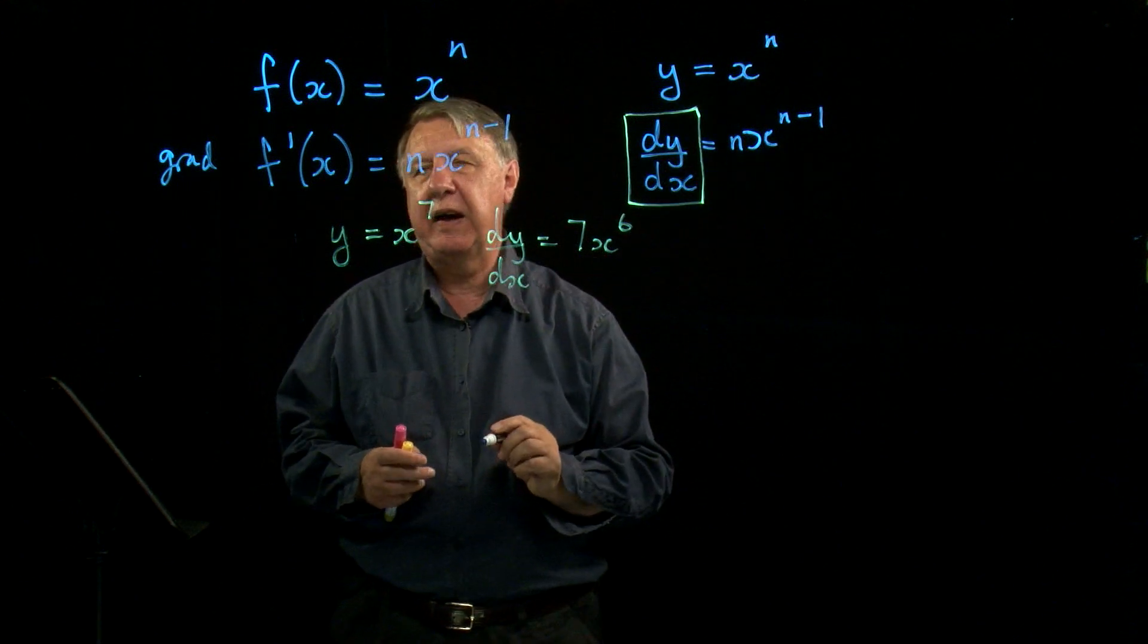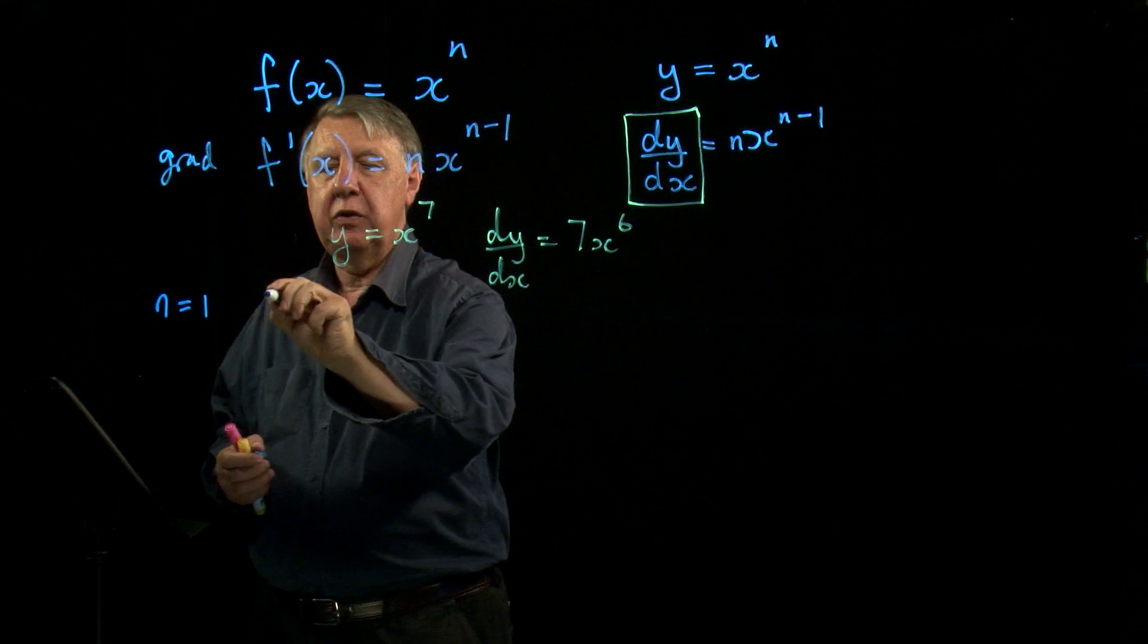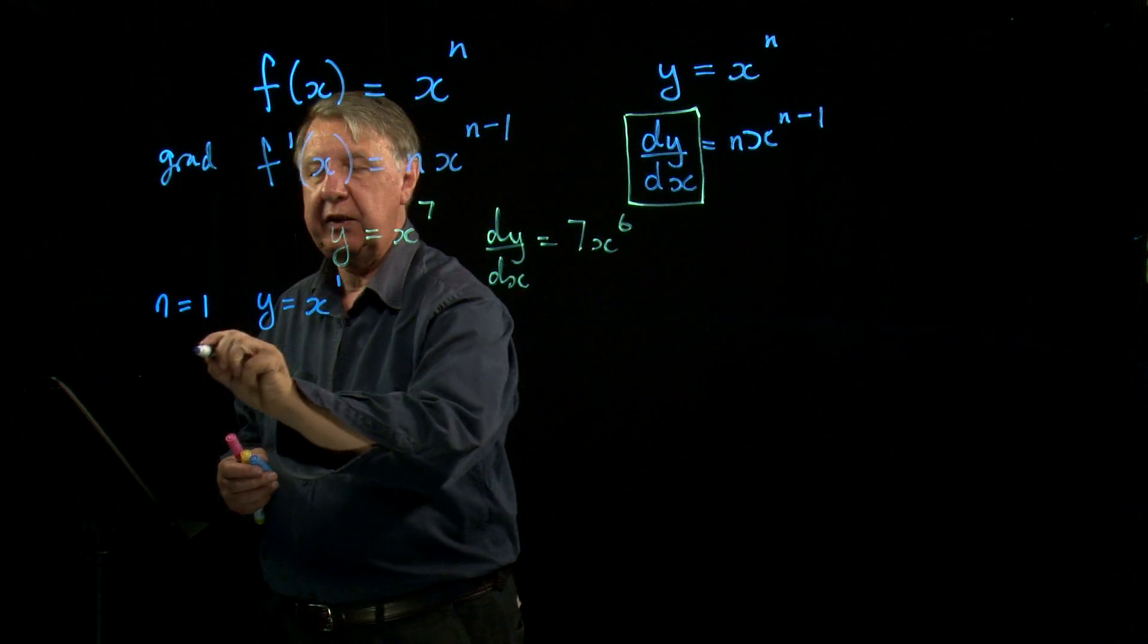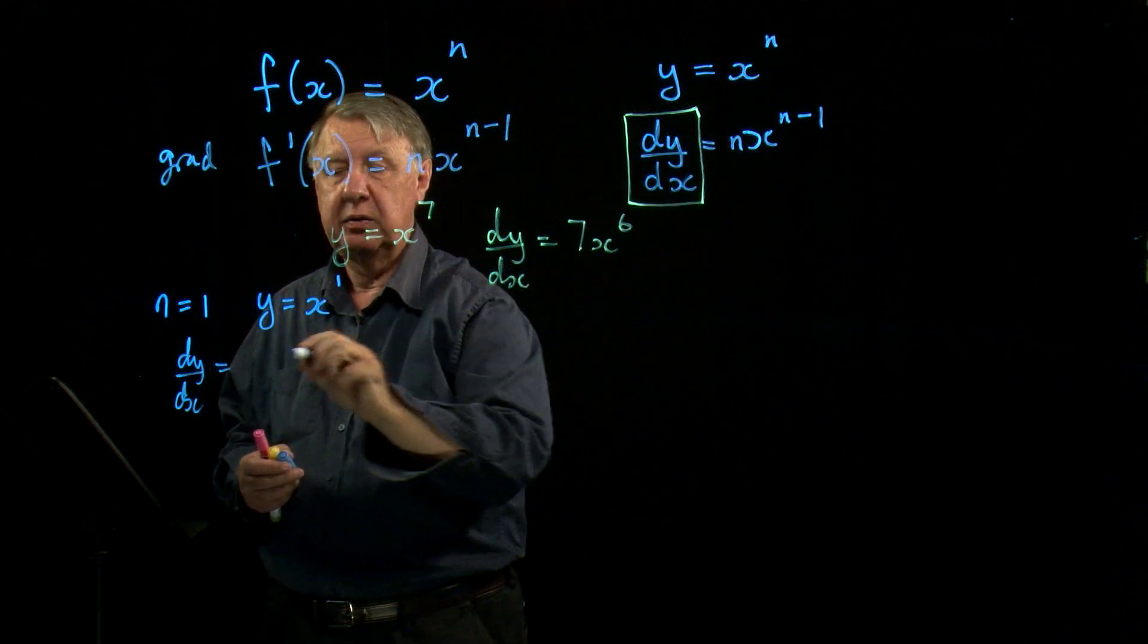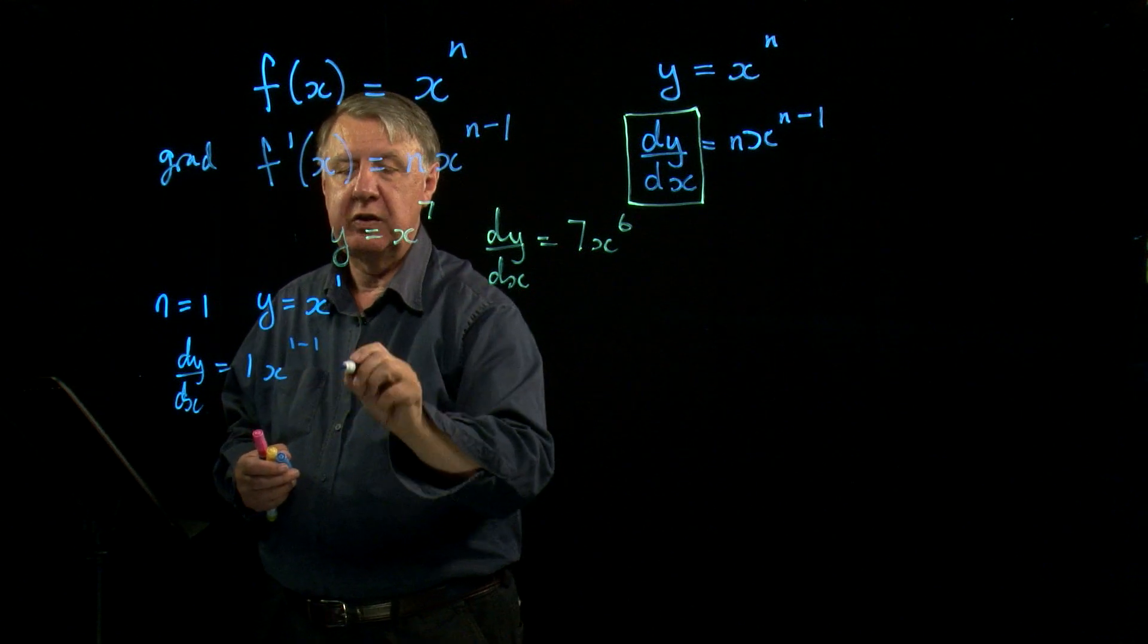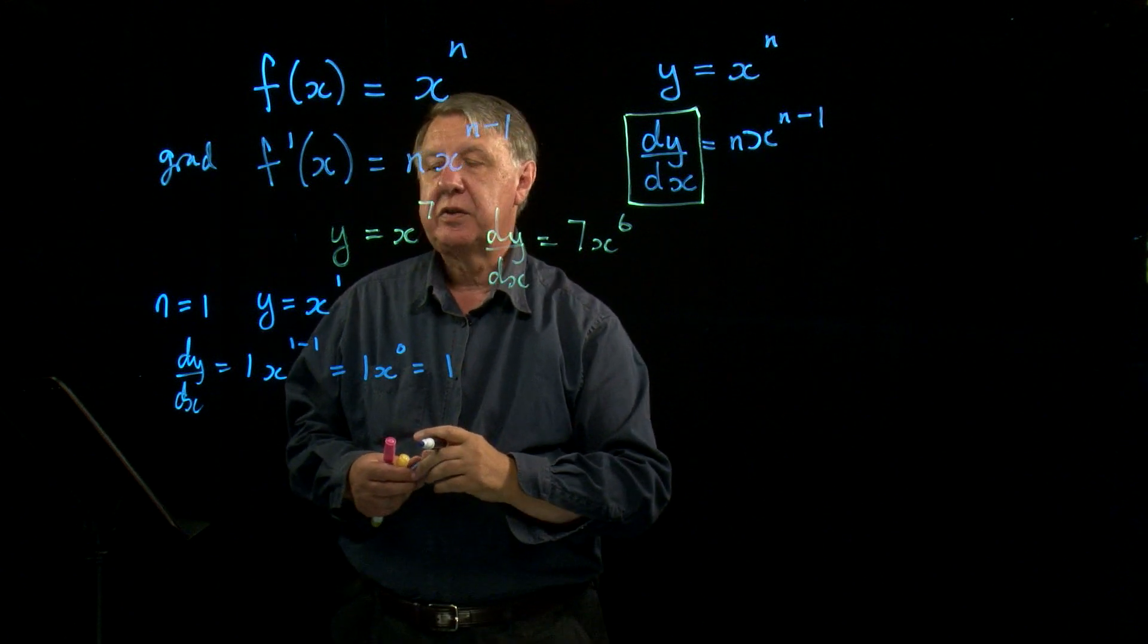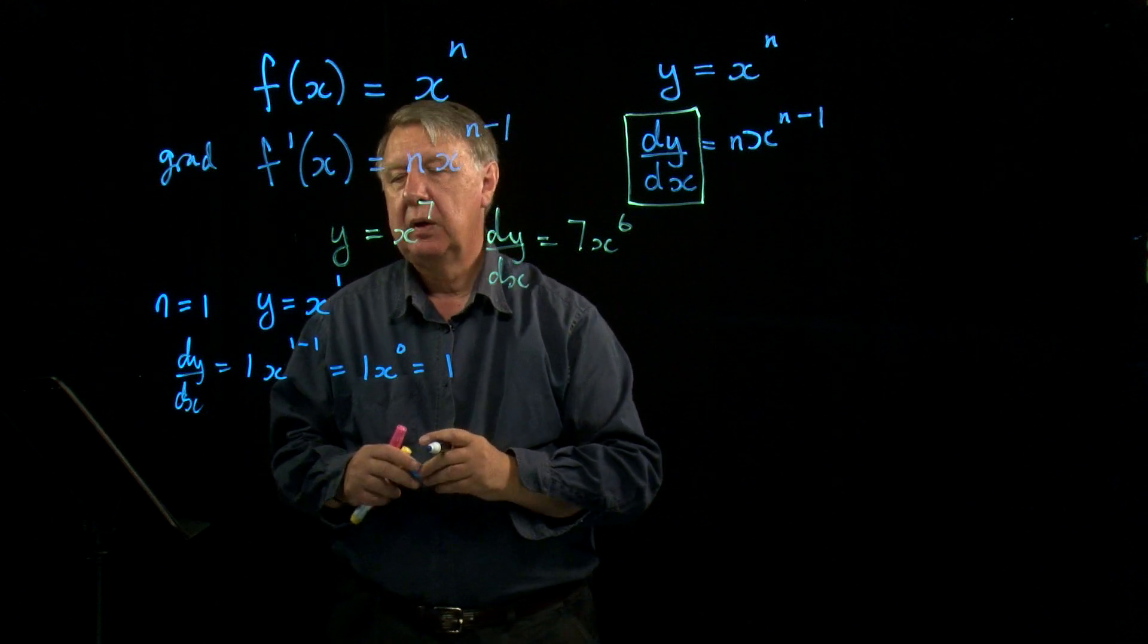So let's worry about if n is 1. If n is 1, y equals x to the 1. According to the rule, dy by dx equals n is 1, so we have 1 times x to the power 1 minus 1, which is 0. So we have 1 times x to the 0, and of course anything to the 0 is 1. So dy by dx is 1. If I differentiate x, I get 1.